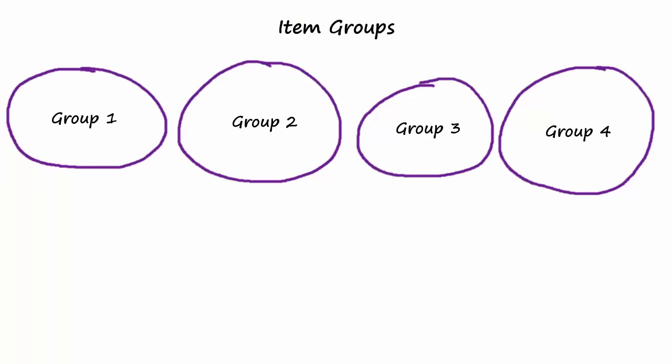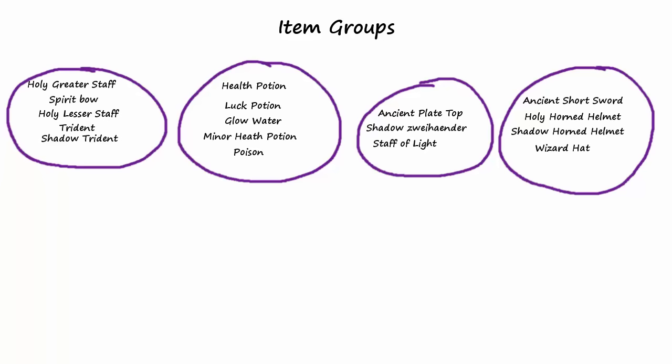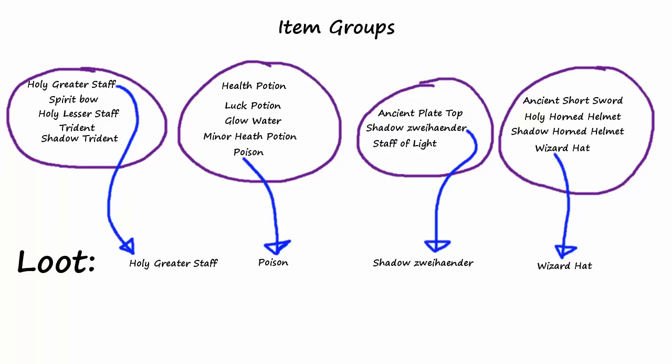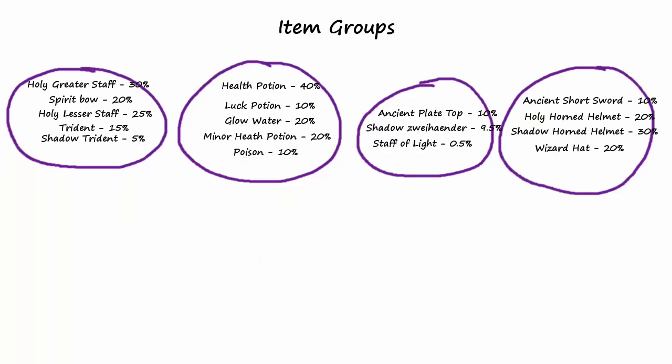The item drop is generated from various item groups. For each mob I can set any number of item groups, and then I can add any number of items to each of these groups. When the loot is generated for that mob it selects one item from each of the groups. Each item also has its own probability of being selected from its group, so some items will be chosen more than others. Each group also has a chance of returning no item at all, although that probability can be set to 0 if I want an item to always be selected from that group.